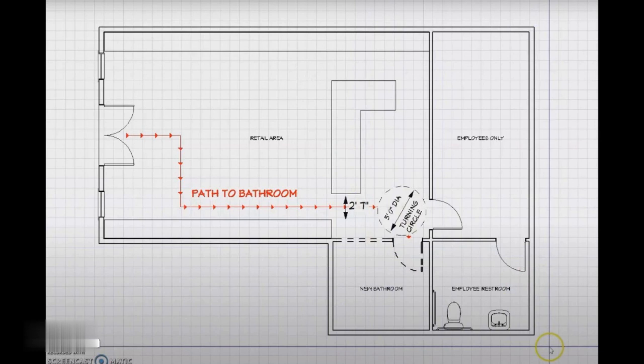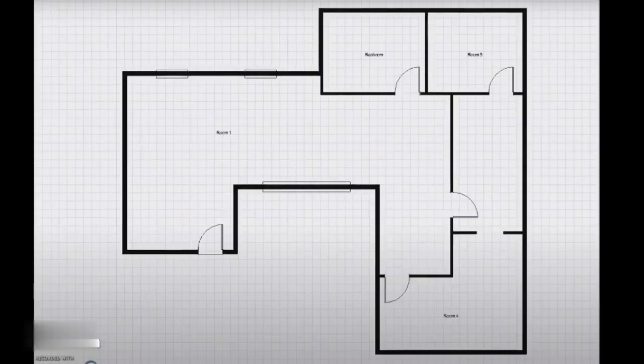However, most of the time, the floor plans given to us look something like this. Here we see black lines representing walls with room titles, doors, and windows. Aside from not having any actual dimensions on them, floor plans like these are usually outdated with walls in slightly different places and missing doors and windows.